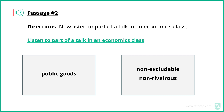Now listen to part of a talk in an economics class. Today we're going to be discussing public goods. Lots of individuals and businesses create new ideas and products every day, and most expect to get some money from their creations. But what happens when you make something that has such a tremendous benefit to society that you can't expect to receive any money in return? This kind of good is a public good. Can anyone think of examples of a public good?